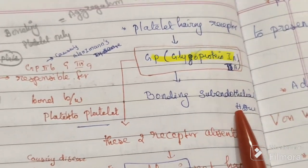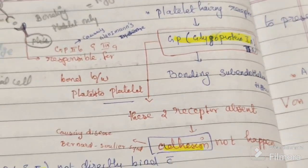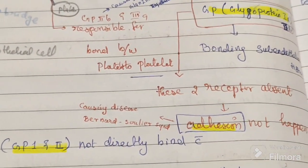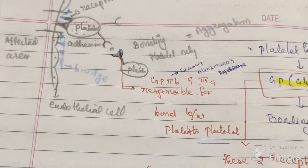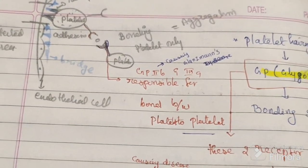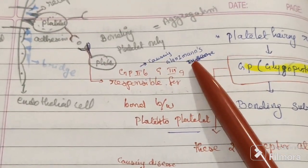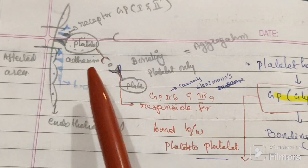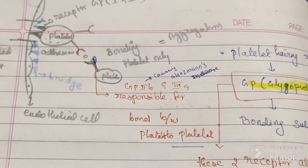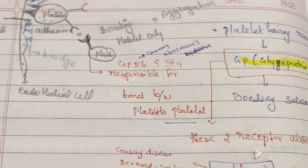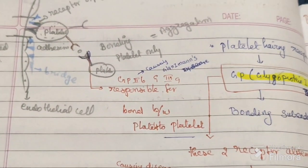Glycoprotein 1a and 2a mediate binding to the endothelial cell. If this receptor is absent, it causes a disease called Bernard-Soulier syndrome. If the platelet-to-platelet aggregation receptor is absent, it causes a disease called Glanzmann's thrombasthenia. In both conditions, excessive bleeding occurs. These are congenital conditions mainly affecting newborns, with umbilical cord bleeding being a key presentation that can be fatal.